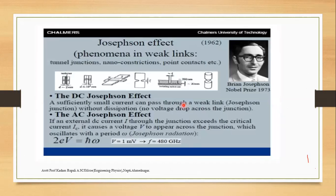The Josephson effect is a phenomenon in the weak link. It is related to DC (direct current) and AC (alternating current) types. In the Josephson effect, two superconductors are connected by a thin layer of insulating material approximately 1.2 nanometers thick. That junction point is called a Josephson junction.